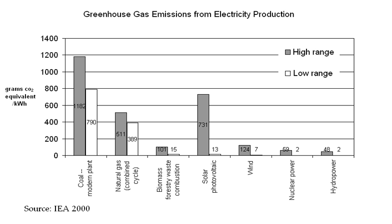As part of its strategy, California implemented a loading order for new energy resources that puts energy efficiency first, renewable electricity supplies second, and new fossil-fired power plants last. Energy conservation is broader than energy efficiency in that it encompasses using less energy through behavioral change. Examples include heating a room less in winter, driving less, or working in a less brightly lit room. According to the International Energy Agency, improved energy efficiency in buildings, industrial processes, and transportation could reduce the world's energy needs in 2050 by one-third and help control global emissions of greenhouse gases.